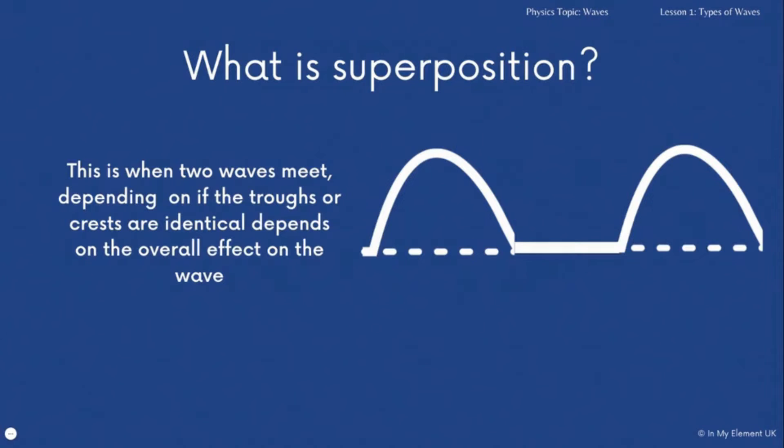You also need to know what superposition is. This is what happens when two waves meet, and there are a variety of outcomes depending on what the waves are, what position the waves are in when they've met. It depends on if the trough or the crest of the wave are identical, and then that depends on the overall movement of the wave at the end.